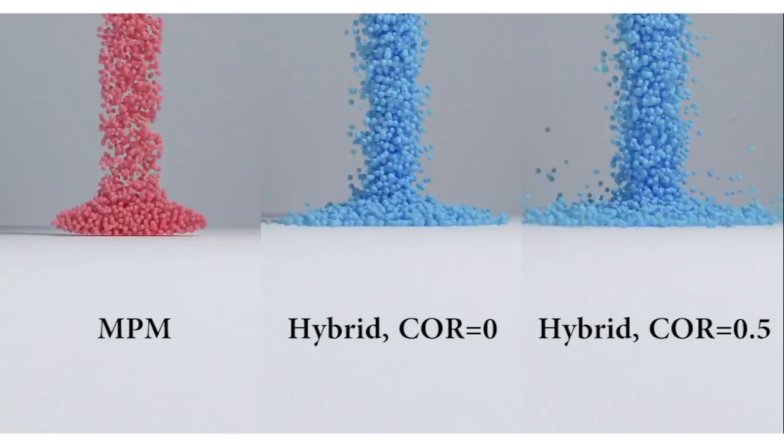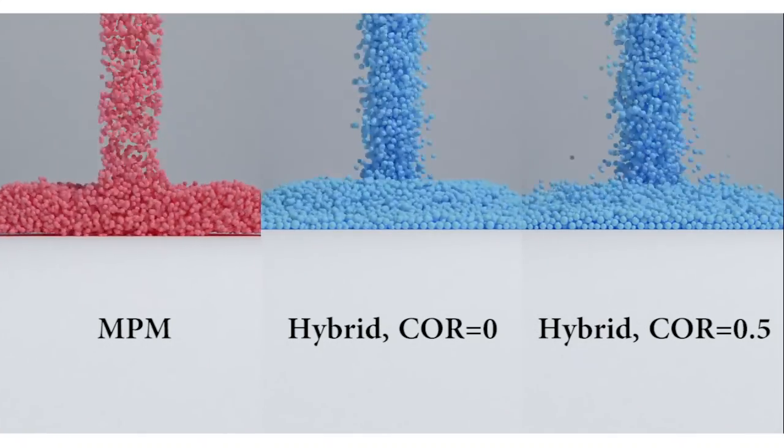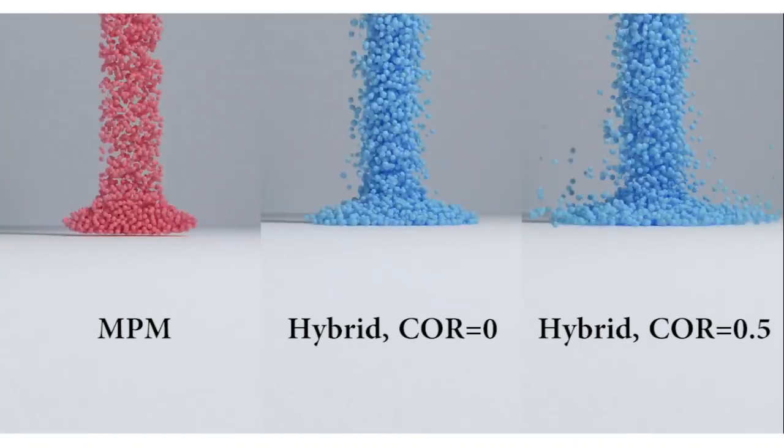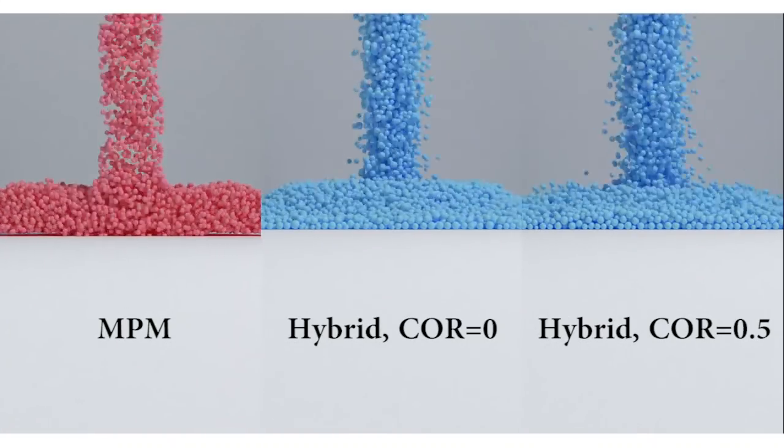When the coefficient of restitution equals 0, the hybrid approach has a more uniform flow shape, whereas when the coefficient of restitution equals 0.5, our hybrid approach successfully captures the ballistic motion.